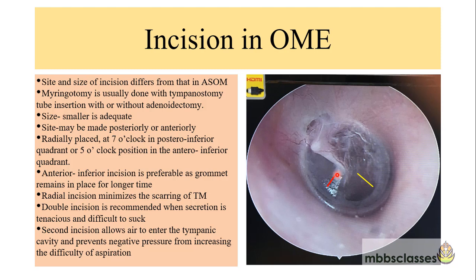The incision can be given in the anterior inferior quadrant or the posterior inferior quadrant — at the 7 o'clock or 5 o'clock position. The size is usually smaller than that used for ASOM. The anterior inferior quadrant incision is preferred when Myringotomy is combined with insertion of a tympanostomy tube, as the grommet remains in place for a longer time. This type of radial incision minimizes scarring of the tympanic membrane.